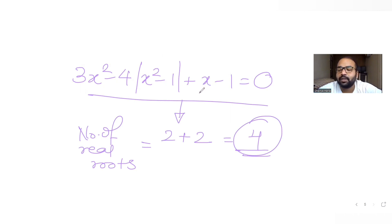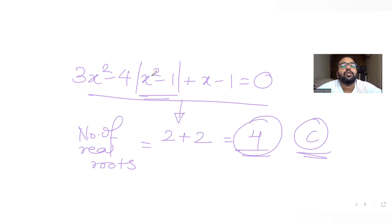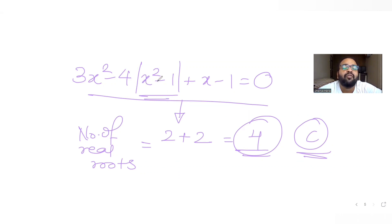The answer is option C — four real roots. I hope you have understood how to solve this type of question where mods are present. Always remember: if the expression within the mod is positive, write it as it is; if it is negative, multiply the entire expression by -1 when taking it out of the mod. We will meet again tomorrow with the next question. Please like, share, and subscribe if you find this video helpful. Thank you.